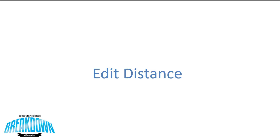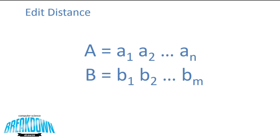When we're talking about edit distance, what we're really trying to do is transform one string A into another string B. Now A is of length N and B is of length M, and because of this we can actually get the edit distance between any two strings.